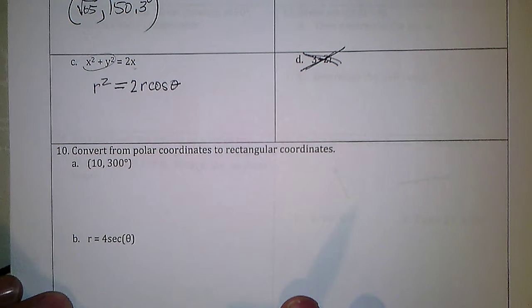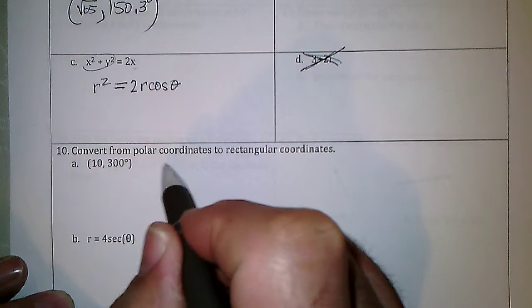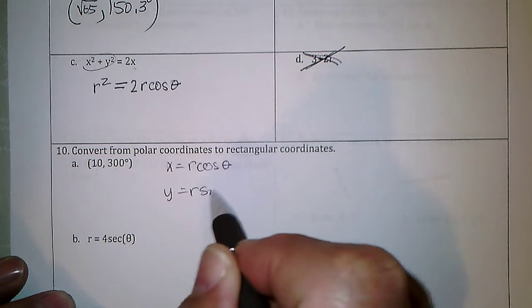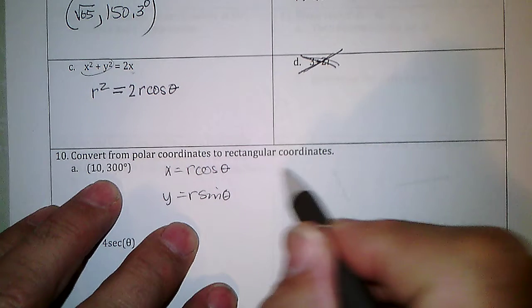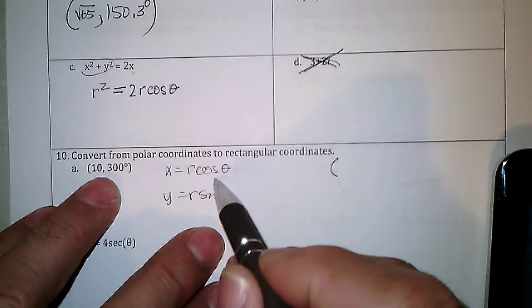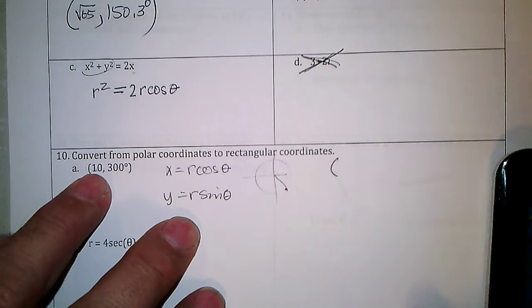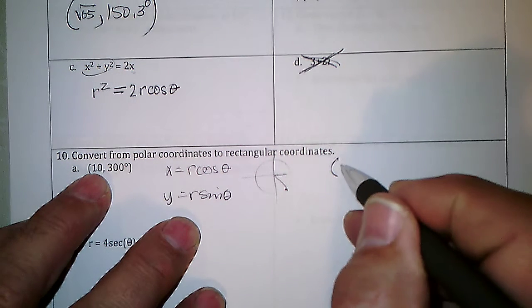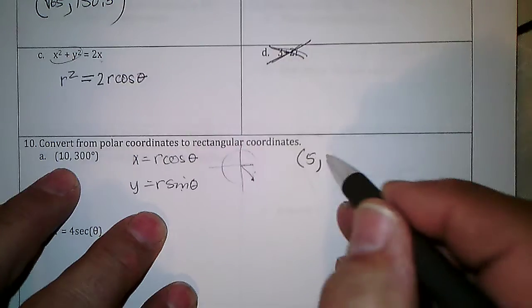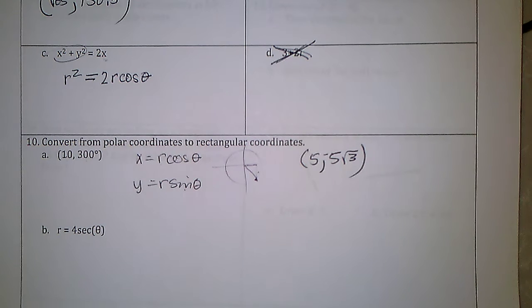Convert from polar to rectangular. This is r and this is θ. x = r·cos(θ) and y = r·sin(θ). So x = 10·cos(300°). Since 300° is a special angle, cosine is 1/2, so x = 10 × 1/2 = 5. And sine of 300° is −√3/2, so y = −5√3.